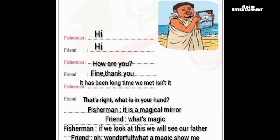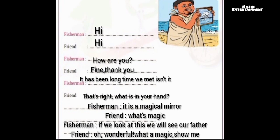Fisherman: Hi, friend. Friend: Hi, fisherman. How are you? Friend: Fine, thank you. Fisherman: It has been a long time since we met, isn't it? Friend: That's right. What is in your hand? Fisherman: It is a magical mirror. Friend: What's the magic? Fisherman: If we look at this, we will see our father. Friend: Oh, wonderful! What a magic — show me.